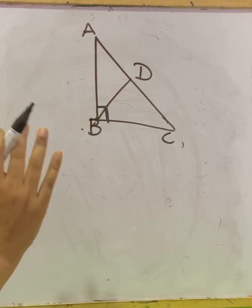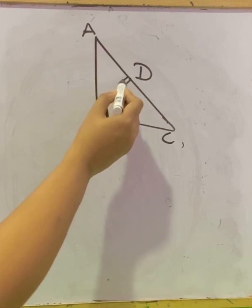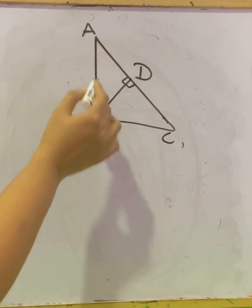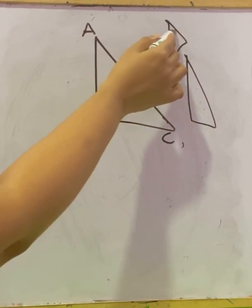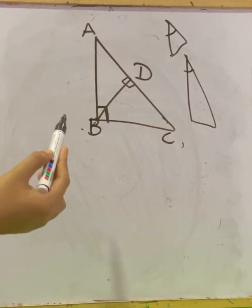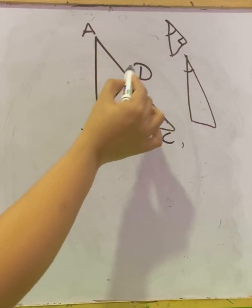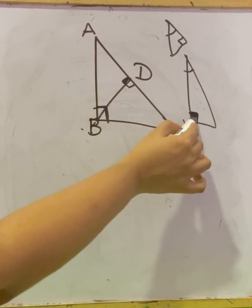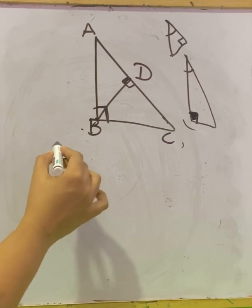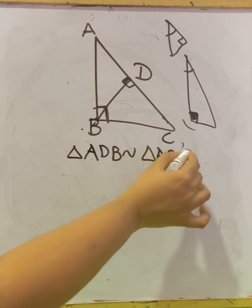We will check if there is any relation between these three triangles and their similarities. Now in triangle ADB and triangle ABC, we can see angle A is equal to angle A, that is common. And in triangle ADB, angle D is 90 degrees, and in the bigger triangle ABC, angle B is 90 degrees. So according to AA similarity, triangle ADB is similar to triangle ABC.